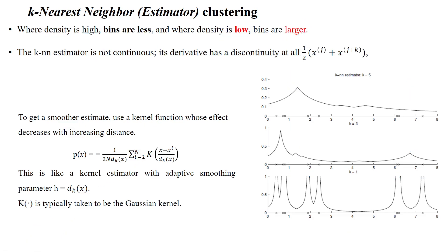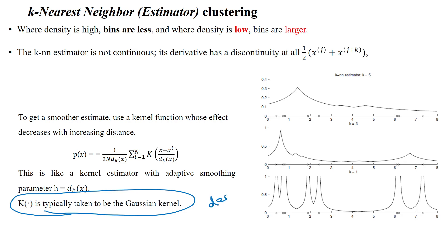If we use the Gaussian kernel function, it will give a better estimation of the density of the cluster. For density estimation, we can use the K-Nearest Neighbor algorithm along with a kernel function — specifically the Gaussian kernel — to know the number of data points available in the cluster, meaning the density of the cluster. Thanks for watching.